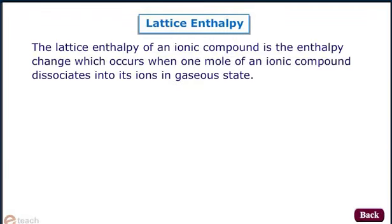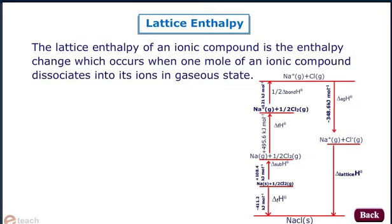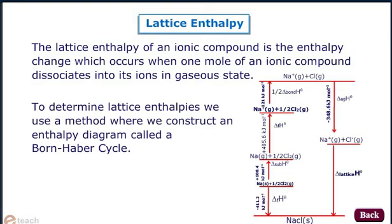Let us study lattice enthalpy. The lattice enthalpy of an ionic compound is the enthalpy change which occurs when one mole of an ionic compound dissociates into its ions in the gaseous state. To determine lattice enthalpies, we use a method where we construct an enthalpy diagram called a Born-Haber cycle. The figure shows an example of the Born-Haber cycle.